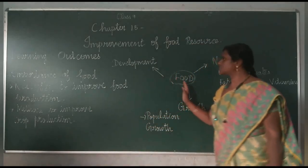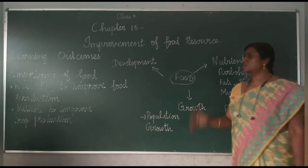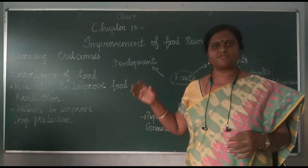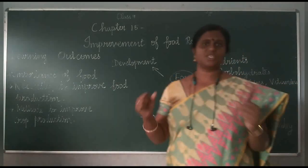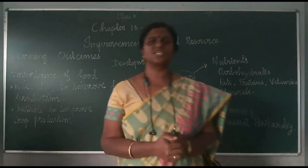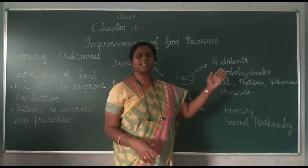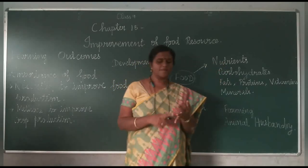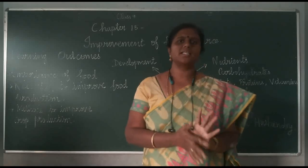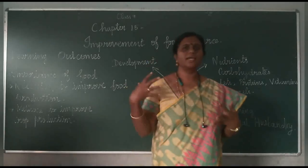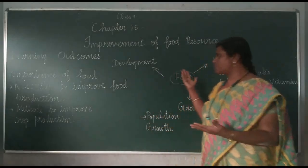This is a simple diagram which shows the different functions of food, or the importance of food. If you take food, the first point that comes to our mind is that food gives energy to us — it gives energy in the form of nutrients. What are the nutrients? These are the list of nutrients: carbohydrates, fats, proteins, vitamins, minerals. These are the nutrients which are supplied by food.